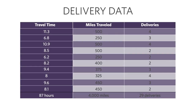What we see here is data on travel time for a handful of trips that our trucks have made, along with miles traveled and deliveries made. In this dataset we've got a total of 87 hours of travel time. These trucks traveled a combined 4,000 miles and made a combined 29 deliveries. The question is: how can I use this information to predict travel time?